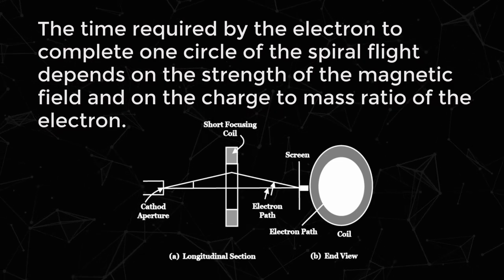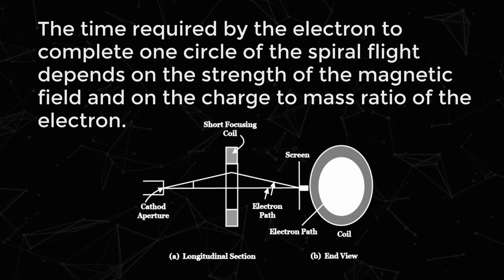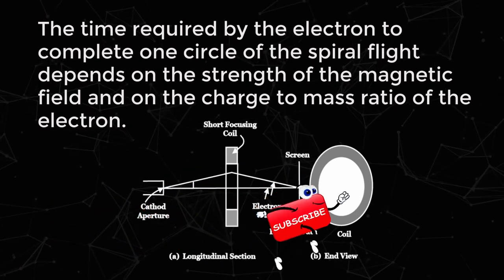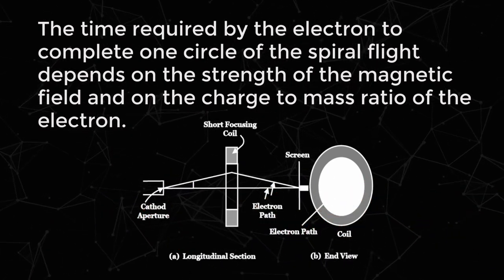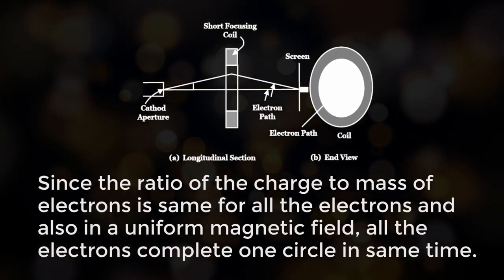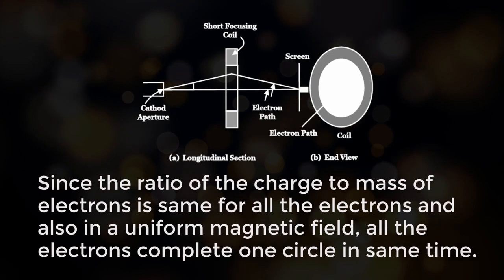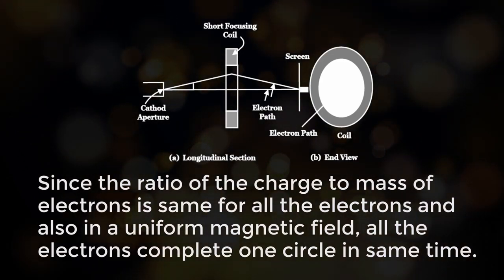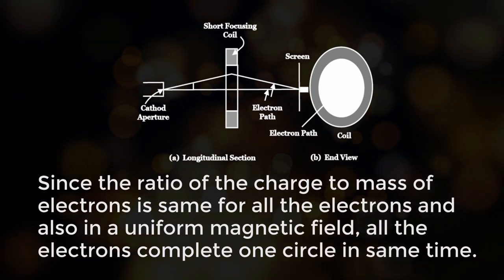The time required by the electron to complete one circle of the spiral flight depends on the strength of the magnetic field and on the charge to mass ratio of the electron. Since the ratio of charge to mass of electrons is same for all the electrons and also in uniform magnetic field, all the electrons complete one circle in same time.